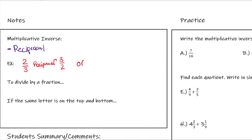Another example: if we have the number 4, we know that as a fraction it's 4 over 1. So the reciprocal of 4 is going to become 1 over 4, because we flipped it — we put the 1 on top and the 4 on the bottom. The important reason we're talking about this is that to divide by a fraction is the same as multiplying by its reciprocal.